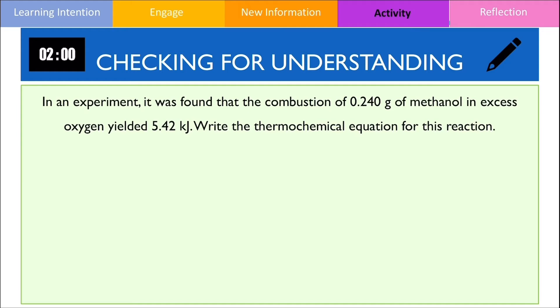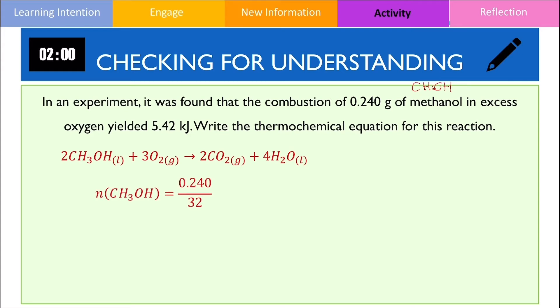This question wants you to write down the thermochemical equation for the combustion of methanol. The chemical formula of methanol is CH₃OH, and the balanced chemical equation should look like this. The next step is to calculate the number of moles of methanol by dividing 0.24 grams with its molar mass, giving us an answer of 0.0075 moles.